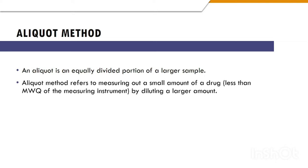For example, if we have an instrument with the minimum weighable quantity of 20 mg, then we cannot weigh 5 mg of a drug with that instrument. We will have to dilute that drug and then weigh it with that instrument.